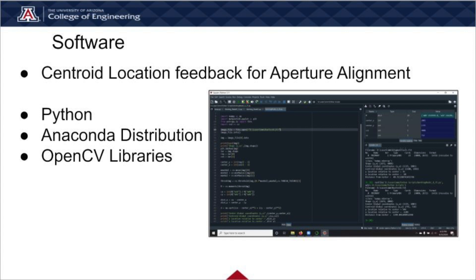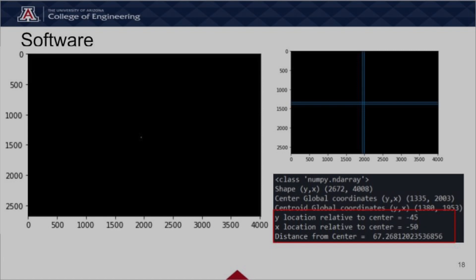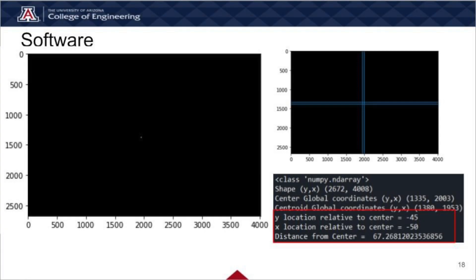The purpose of the software program is to process and analyze an image from the detector in order to determine the centroid of the beam. This information is used as feedback to make manual corrections to the alignment system. The software is written in Python and utilizes Anaconda 3 distribution along with OpenCV libraries. The input from the detector is a .fits file. The image array is extracted and processed, first undergoing thresholding in order to remove noise. The threshold image maintains variation of intensity above the threshold limit in order to achieve high accuracy when locating the centroid. The program displays the centroid's position relative to the center and distance from the center. In the large image on the left, we see the threshold image of the filtered and retro-reflected beam.